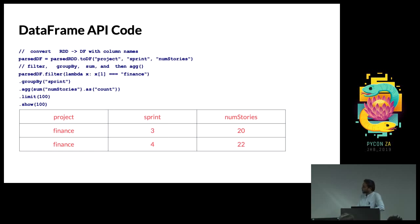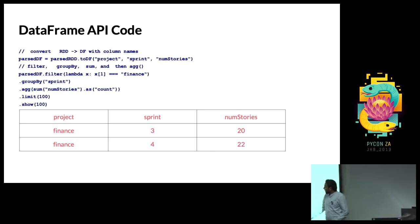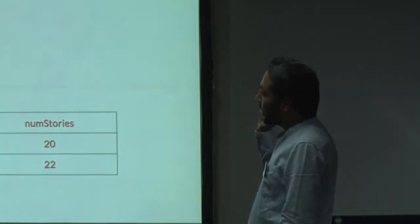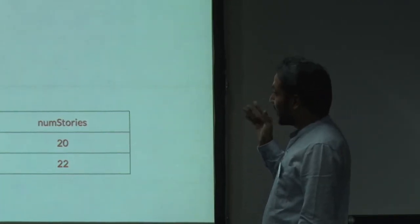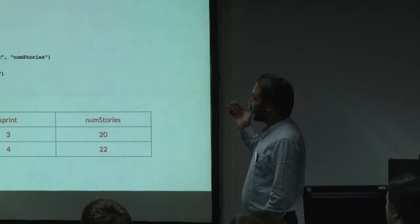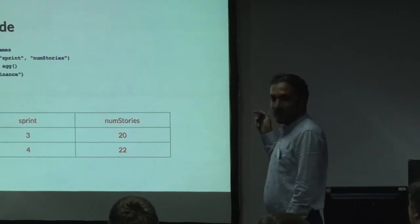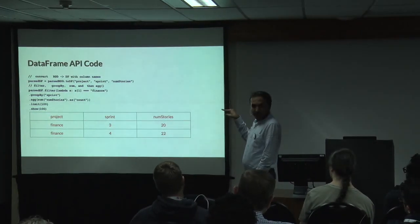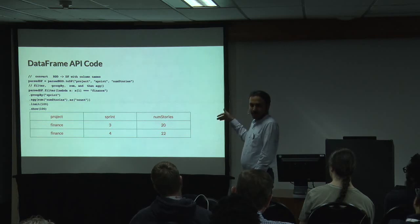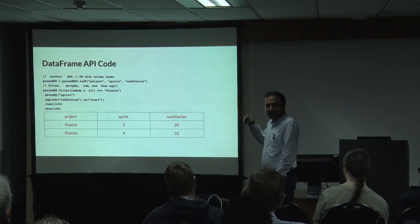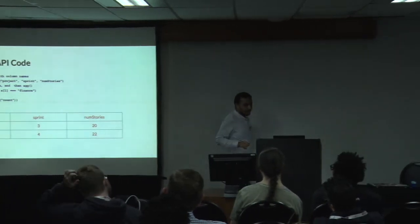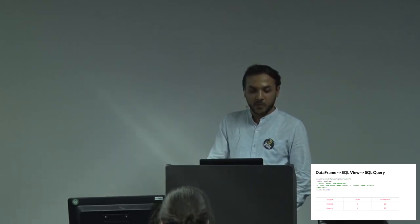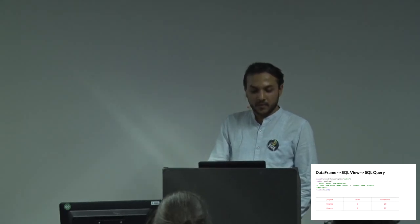Here's a code example: I have an RDD converted to a DataFrame with column names provided. Then I do dataframe.filter using a lambda where the first argument equals 'finance', then groupBy, then aggregate on number of stories as count, then limit 100 and show 100. Using limit(100) before show can improve performance slightly — with just show(100), Spark may fetch everything and then cut it down, whereas limit(100) tells all executors to only fetch 100 rows.